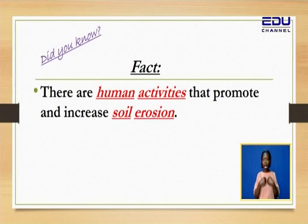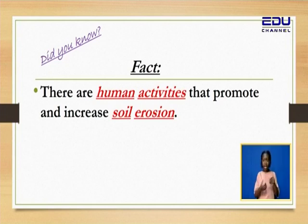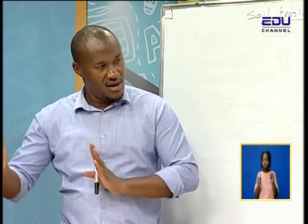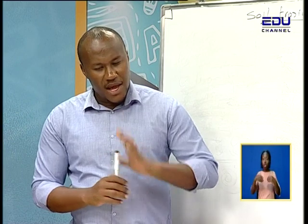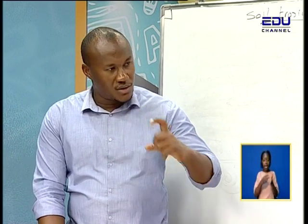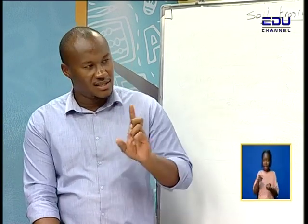So we are going to start with an interesting fact. There are human activities that promote and increase soil erosion. When you talk about human activities, these are agents of soil erosion — things that promote or cause soil erosion. So we are saying human activities promote and increase soil erosion.